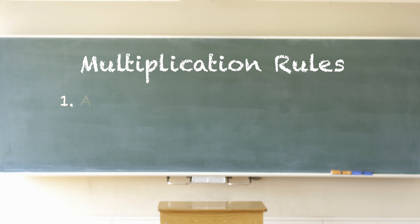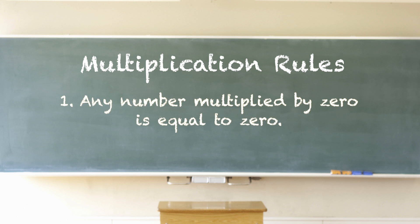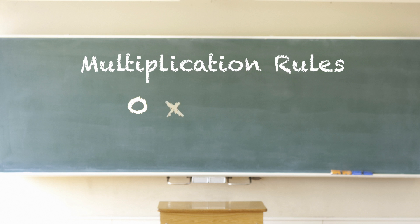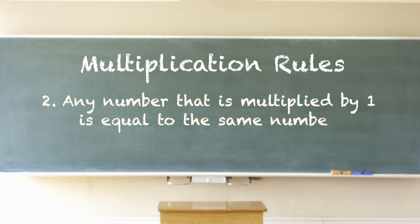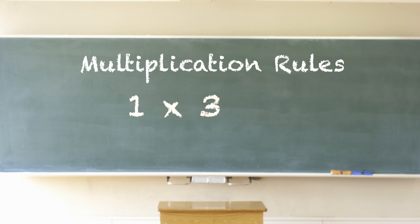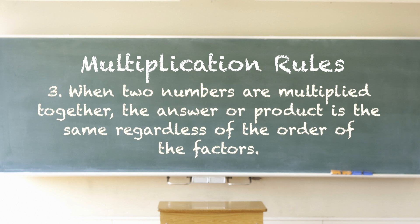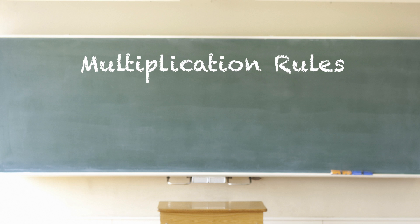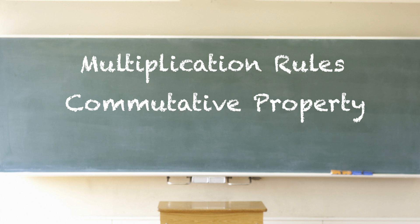Here are some multiplication rules. Any number that is multiplied by zero is equal to zero, so zero times five equals zero. Any number that is multiplied by one is equal to the same number — for example, one times three equals three. When two numbers are multiplied together, the answer or product is the same regardless of the order of the factors. For example, two times three equals three times two — both are equal to six. This is called the commutative property.